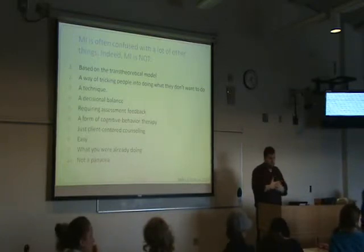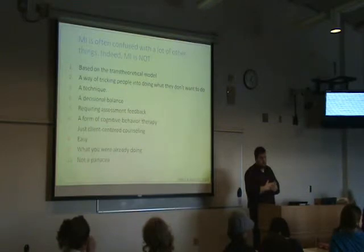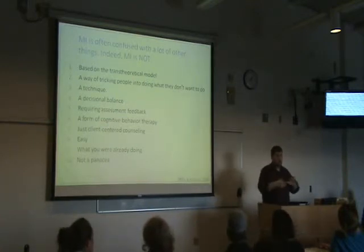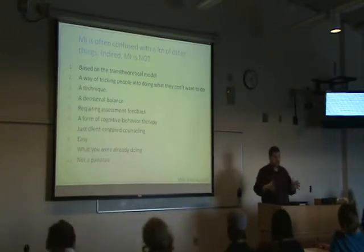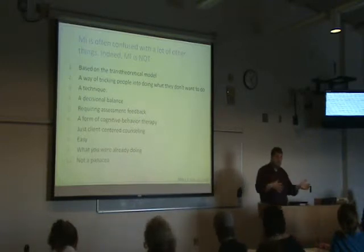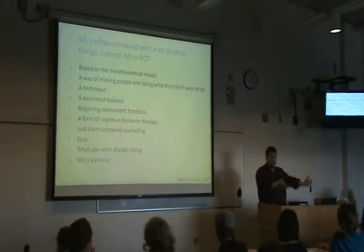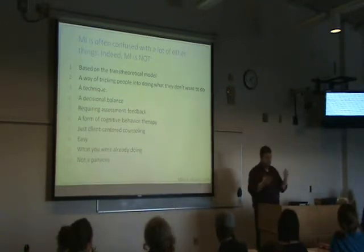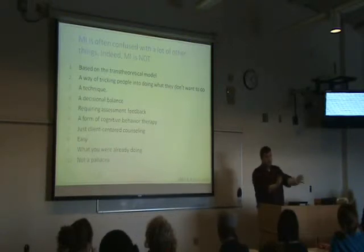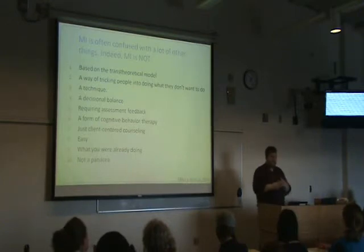Regarding MI with children — how do you determine which children have those capacities? Generally with adolescents you're going to be fine — I'd say 10 and up as a broad rule. Between 10 and 12, kids really gain the ability to have more independence and volition. Younger than that, kids have a lot less control over their lives. A lot of our evidence-based interventions with kids are actually done with the parents, not the kids themselves. For a behaviorally dysregulated eight-year-old, maybe with ADHD, MI is not really going to work with the child — but it's going to work with parents to engage them in a parent-training program.